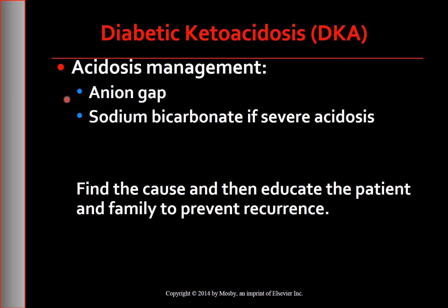Bicarbonate is used only for severe acidosis because it may reverse acidosis too rapidly and lead to severe hypokalemia, which can cause fatal cardiac dysrhythmias. Rapid correction can worsen the patient's mental status. Acidosis is corrected by fluid replacement and insulin therapy. Sodium bicarbonate is given very slowly over several hours when the arterial pH is 7.0 or less. Finally, it is necessary to find the cause and educate the patient and the family to prevent a recurrence of this complication of diabetes.